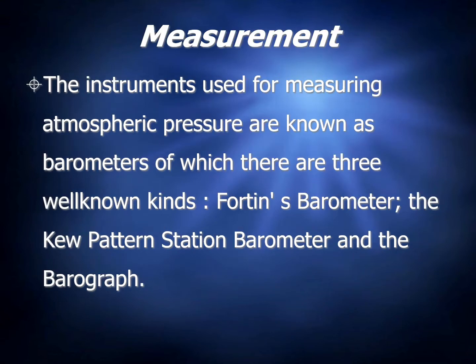Regarding the measurement of atmospheric pressure, the instruments used for measuring it are known as barometers, of which there are three well-known kinds: the Fortin barometer, the new pattern station barometer, and the barograph. All these instruments are used for measuring atmospheric pressure in different areas of the world.